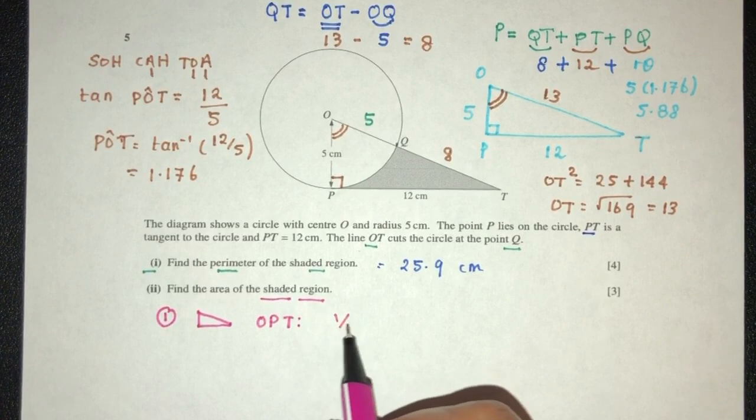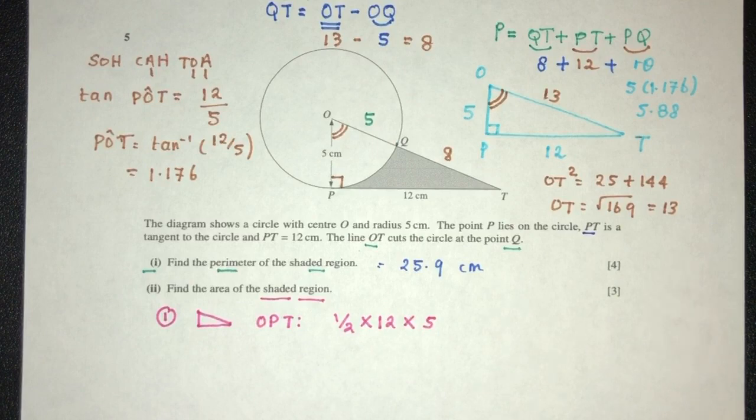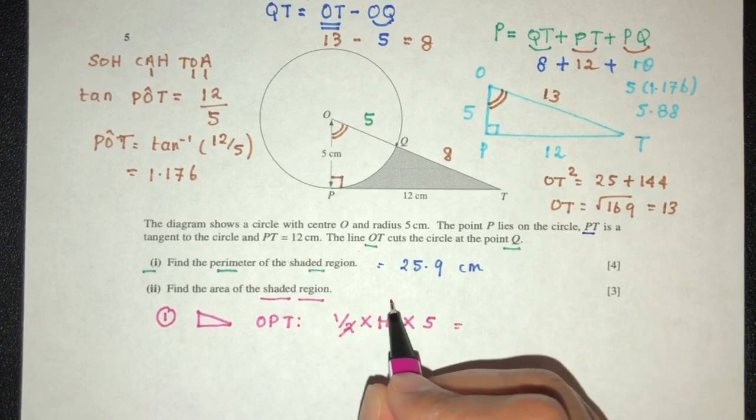Pretty simple. It's half times base times height because it is a right angle triangle. That will be, simplify, that will be 30.